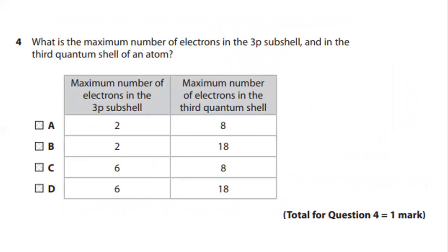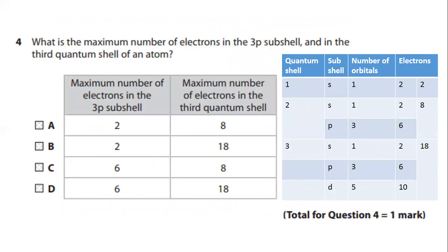Question number 4. What is the maximum number of electrons in the 3P subshell and in the third quantum shell of an atom? The quantum shell 1 is having only one subshell S and number of orbitals in S subshell is 1. The number of electrons occupied is going to be 2. Quantum shell 2 has number of subshells 2, S and P. Number of orbitals 1 and 3. Maximum numbers of electrons can be occupied would be 2 and 6 respectively and total of 8.